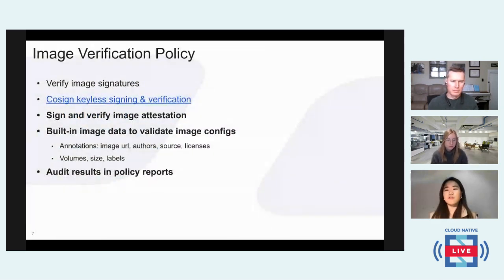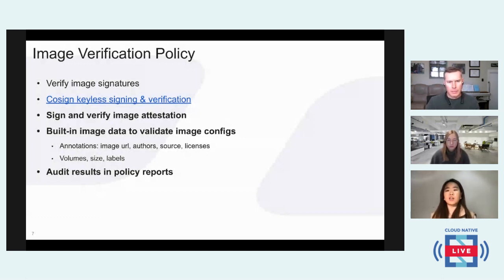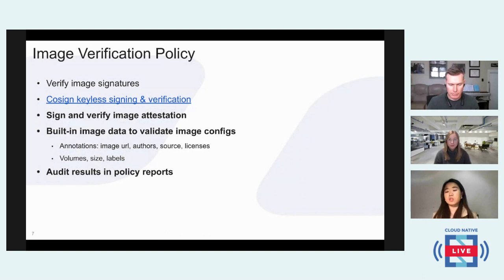The first thing I want to talk about is the image verification policy. With Kyverno 1.5, we have this type of rule enabled to verify image signatures that are signed with or without keys. You can use the tool called cosign to sign the image, which has keyless signing ability. In the Kyverno policy, you just need to provide the root CA so that Kyverno can verify your image signatures using the provided certificate. What's new in 1.6 is using Kyverno policy to verify image attestations, plus the ability to look up image data from an external registry. Background scan is also enabled for this rule type so you can have policy reports based on the configured image verify policy.